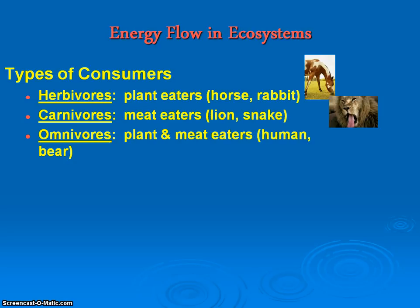Now, depending on the environment will also determine what type of carnivore we have. For example, Great Plains and forested areas will have more herbivores than carnivores or omnivores.